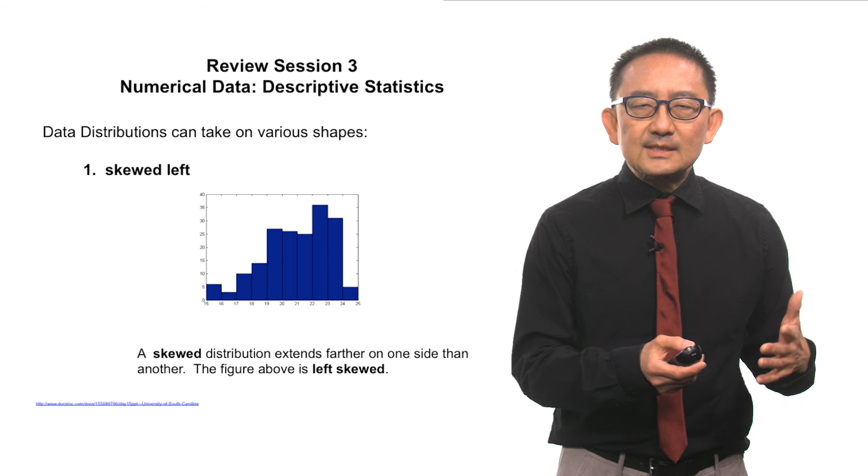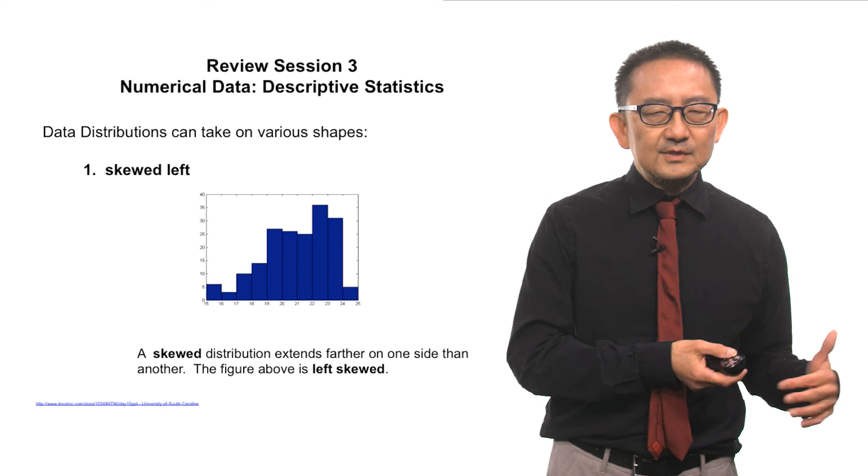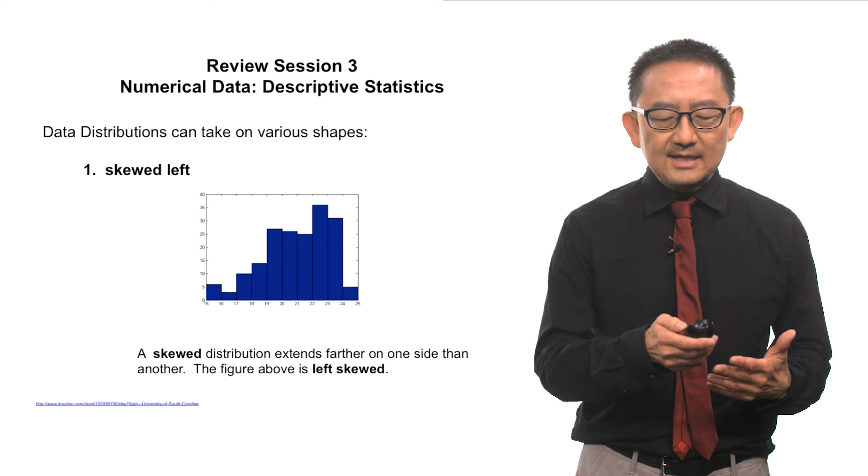In contrast, we see this graphic display where the tail moves to the left-hand side, and we call this skewed left.